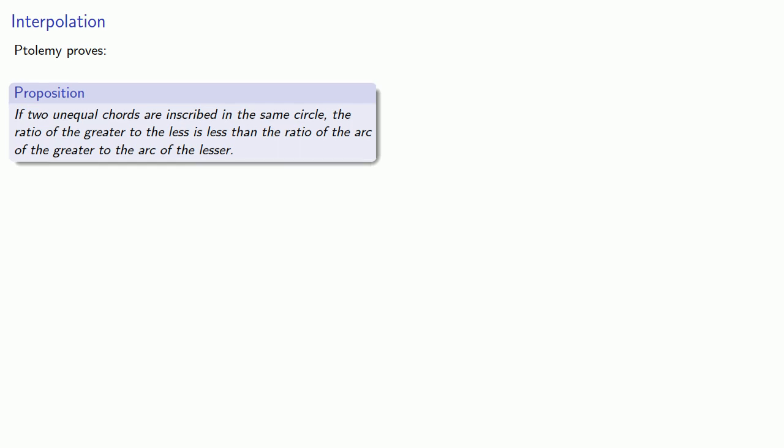If two unequal chords are inscribed in the same circle, the ratio of the greater to the less is less than the ratio of the arc of the greater to the arc of the less. What this allows us to do is find bounds on the length of a chord, as long as we know the length of a chord subtending a greater and a lesser central angle.